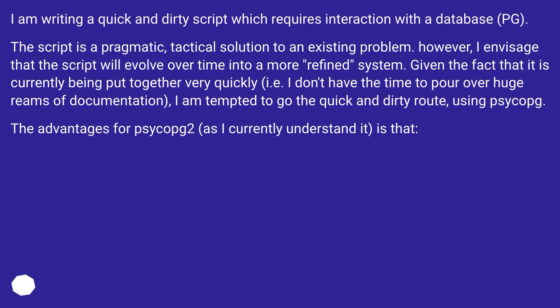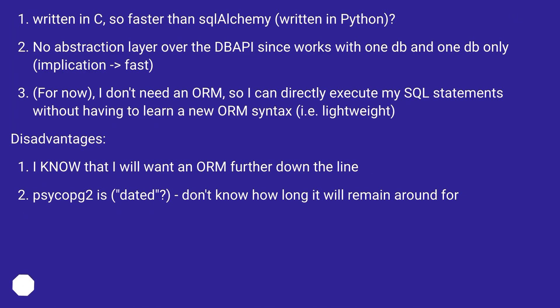The advantages of Psycopg2, as I currently understand it: it is written in C, so faster than SQLAlchemy which is written in Python. No abstraction layer over the API since it works with one DB and one DB only. Implication: fast for now. I don't need an ORM, so I can directly execute my SQL statements without having to learn a new ORM syntax — i.e. lightweight.